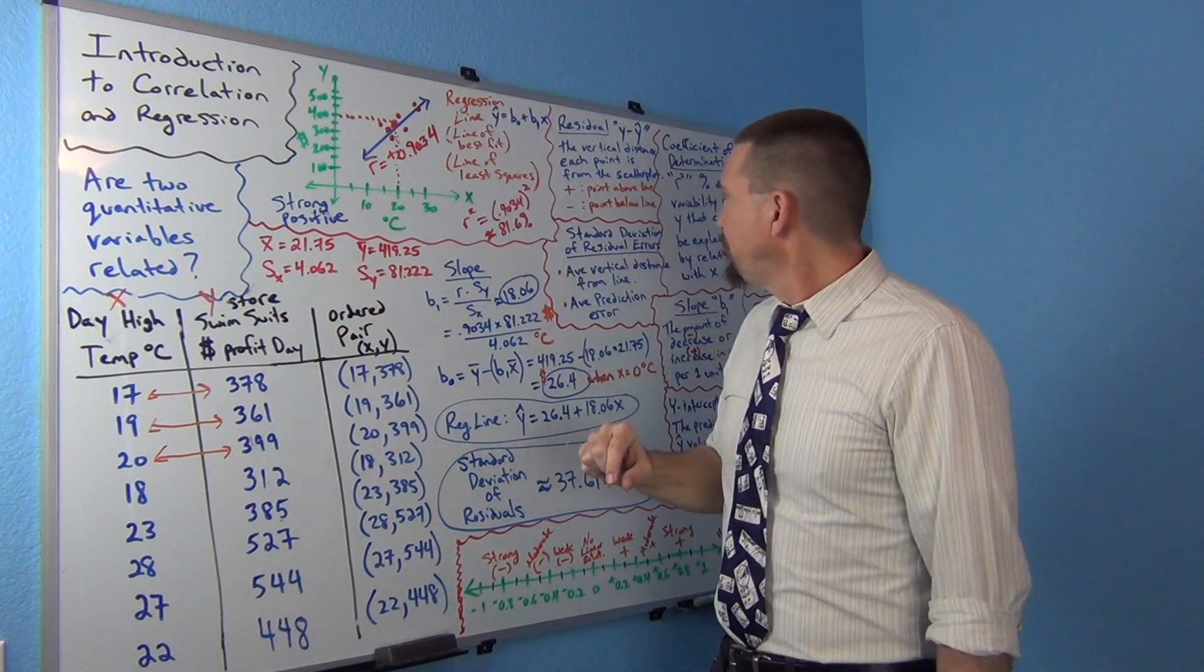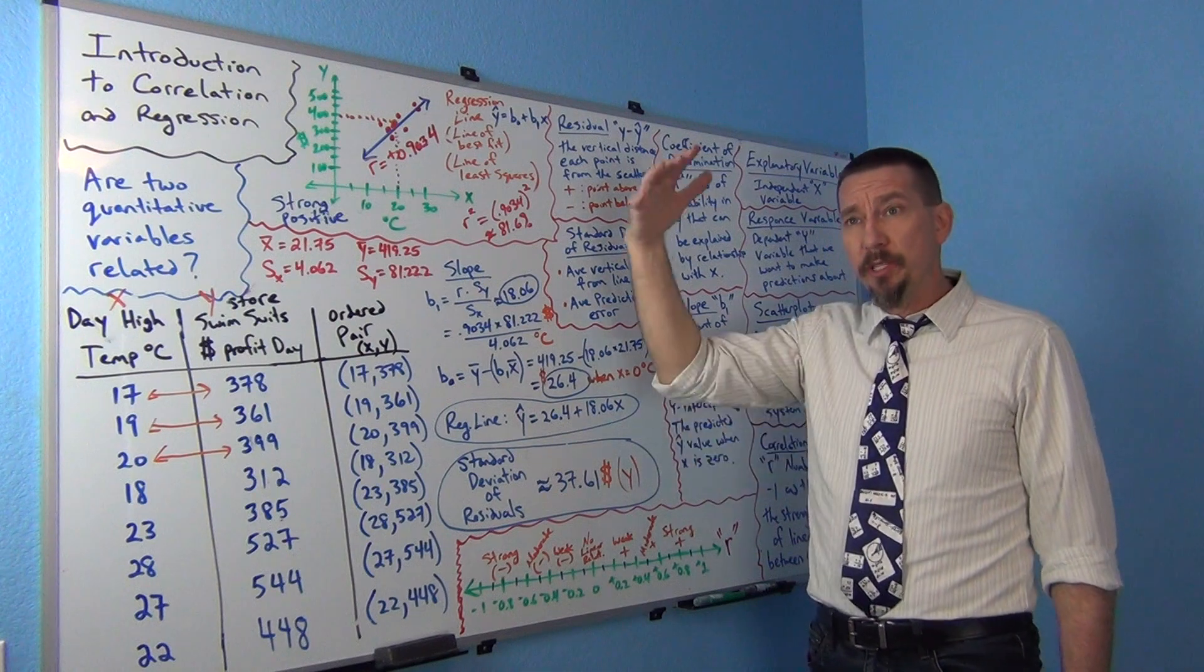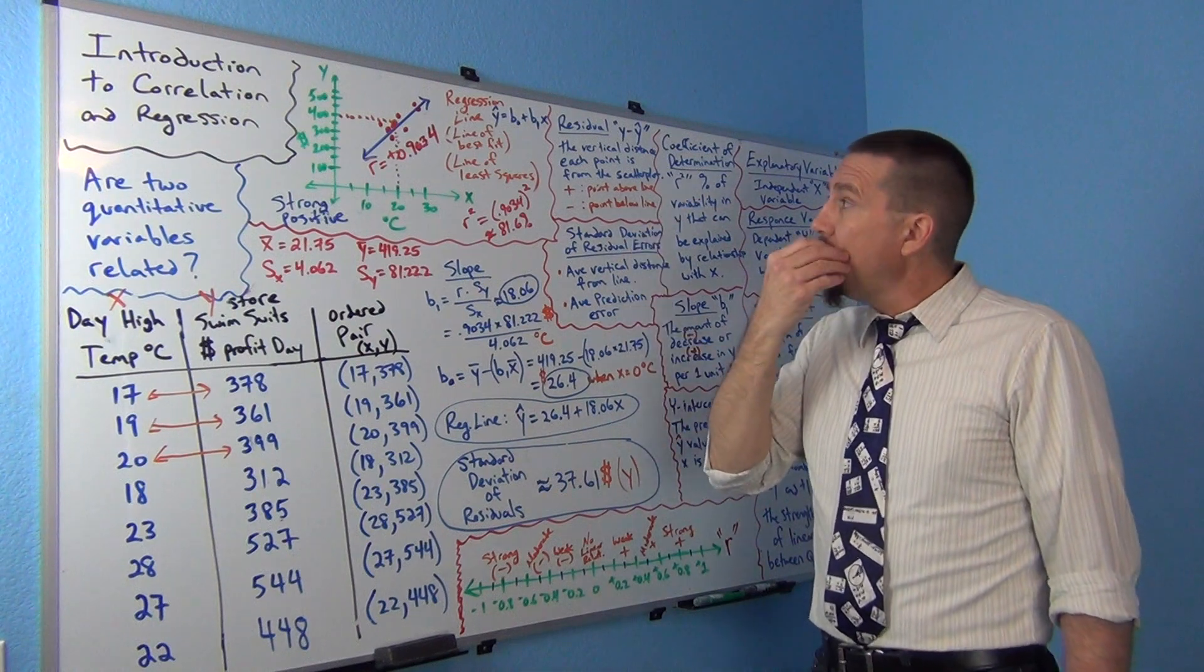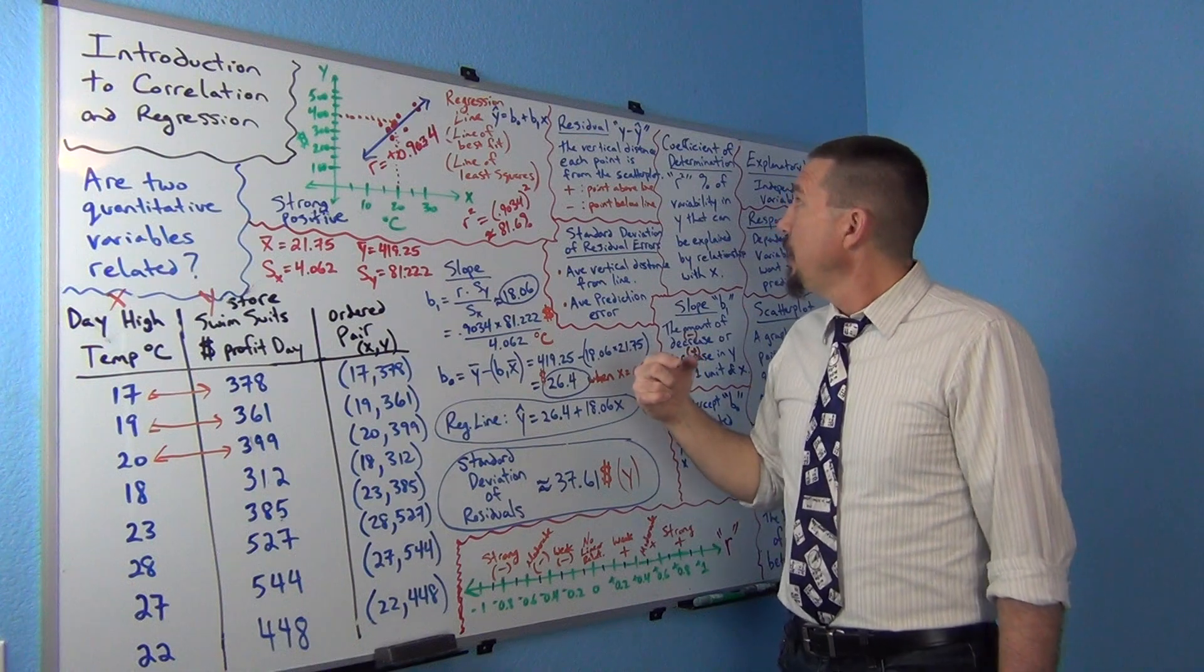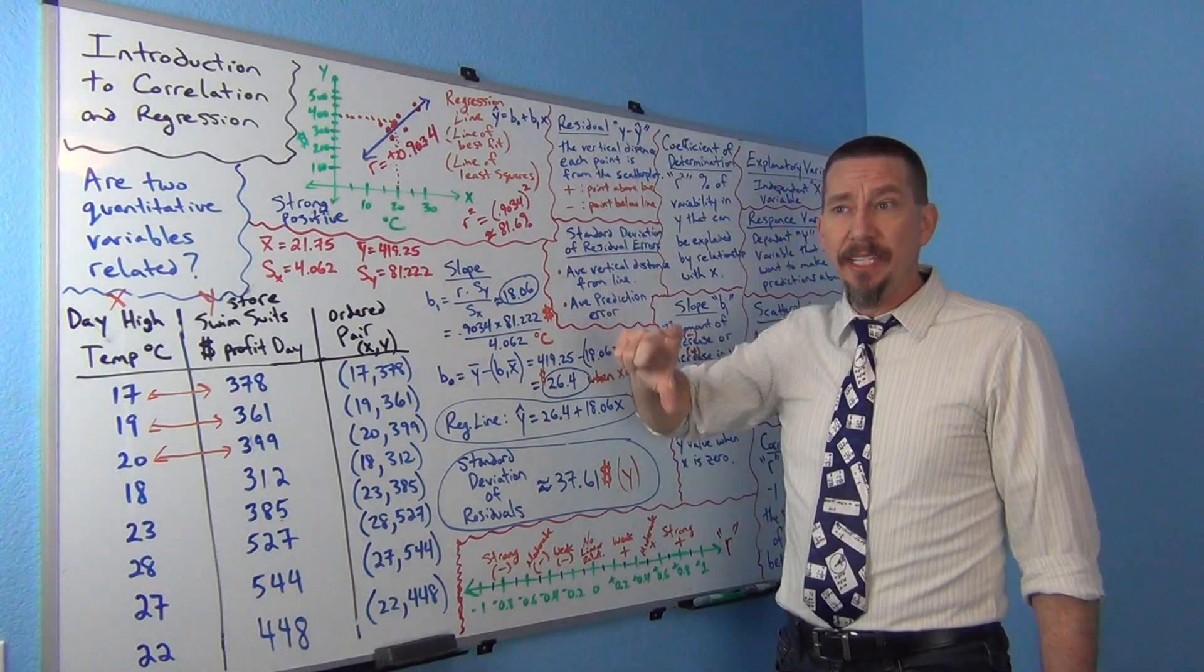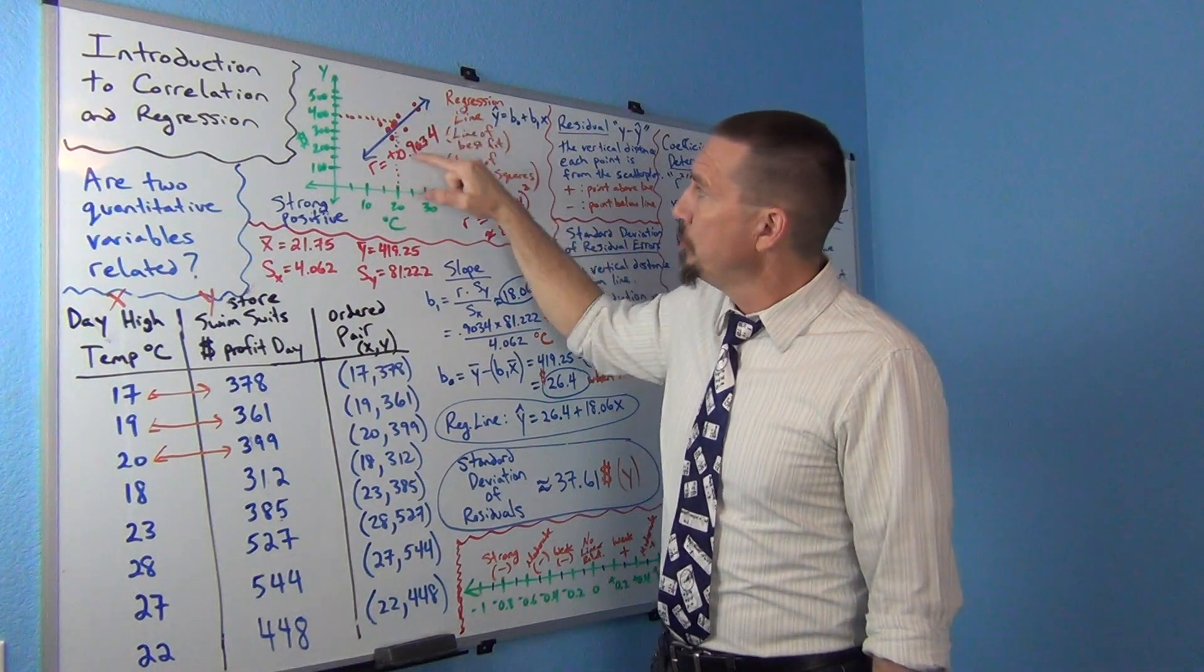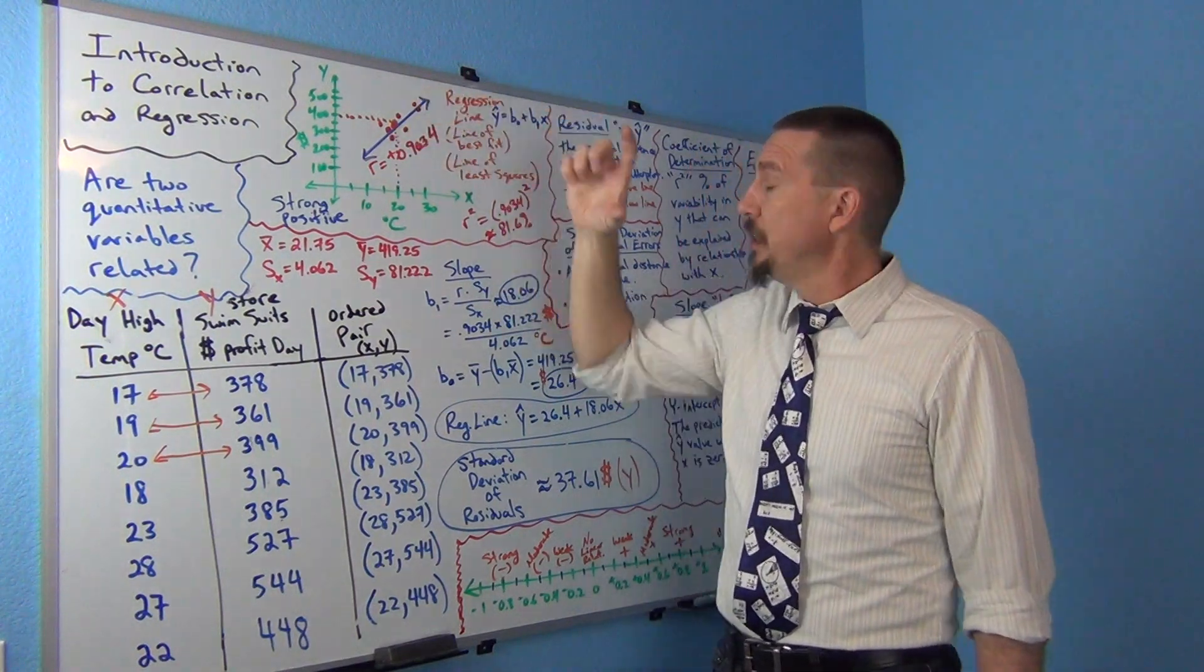Basically when you look at a residual graph or residual chart, we'll kind of get into that maybe next time, you'll see a bunch of negative and positive distances and those are referring to the points that are below the line and the points that are above the line.